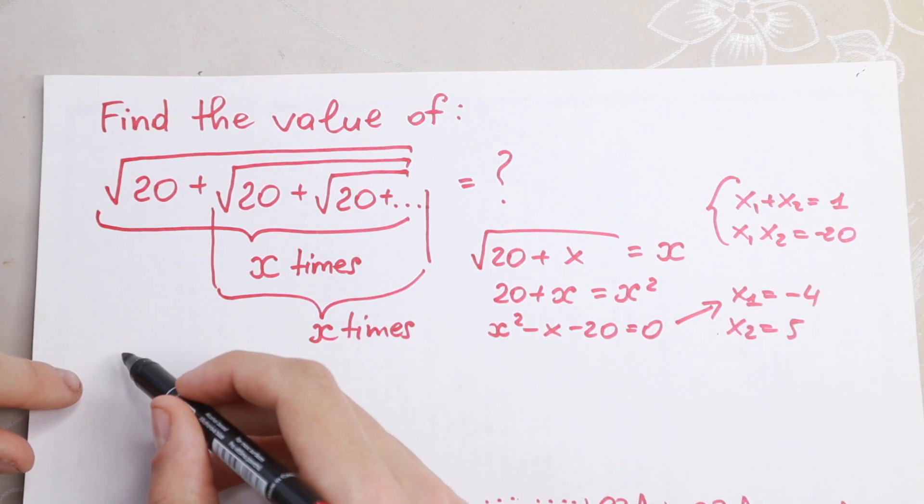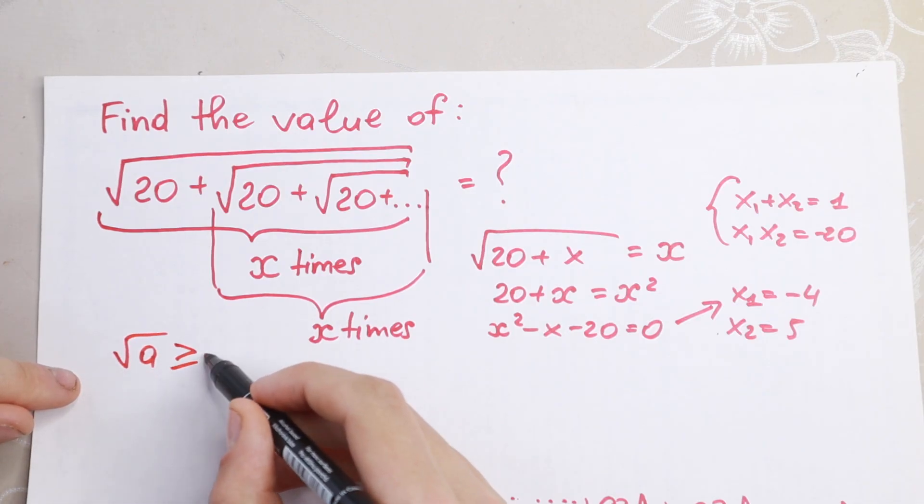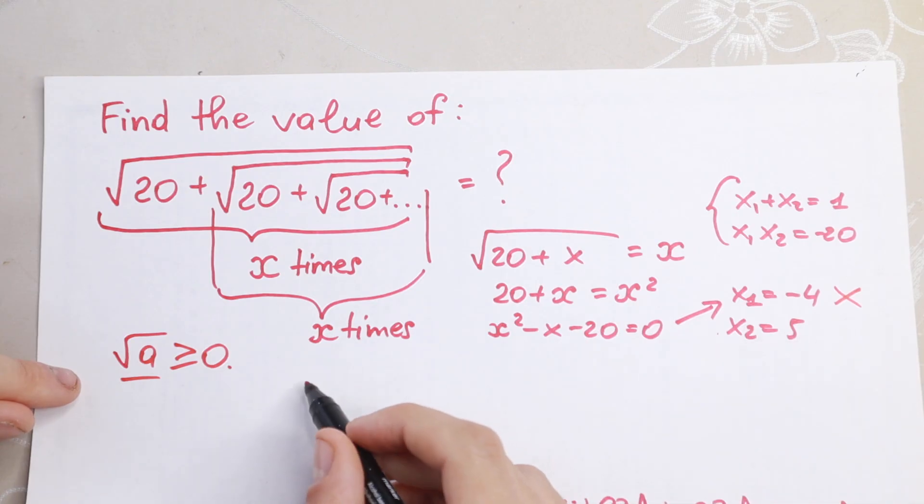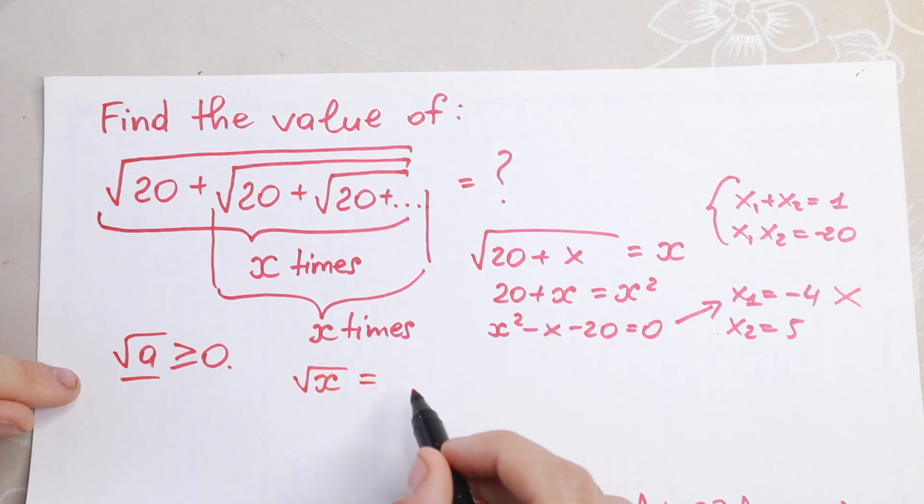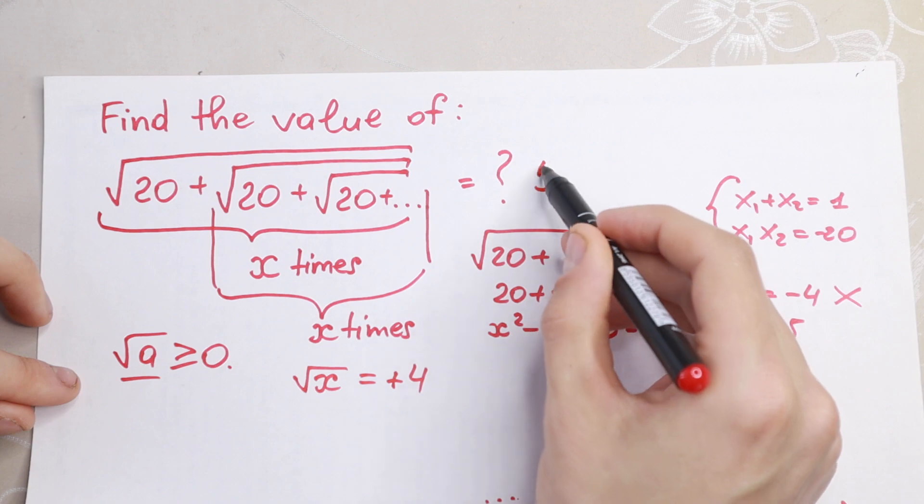As you know, if we have square root—this square root, for example of a—needs to be greater or equal to zero. So we reject the negative root, because we know that doesn't matter what about this x, this x cannot be equal to minus four, because x needs to be only positive.